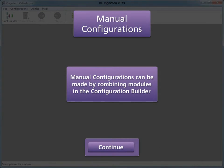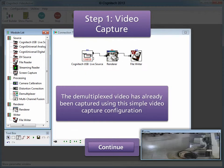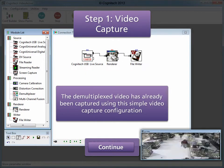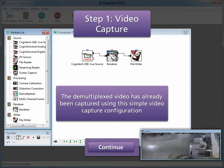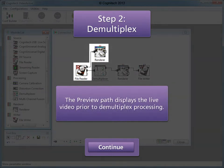The Configurations menu provides an easy way to create standard configurations. Manual configurations allow the user to combine modules in the Configuration Builder to make user-customized configurations. We will demultiplex video in this example using two separate configurations: the first configuration captures the video from the live source, and the second configuration demultiplexes the captured video. The demultiplex configuration has two parallel paths: preview and demultiplex.